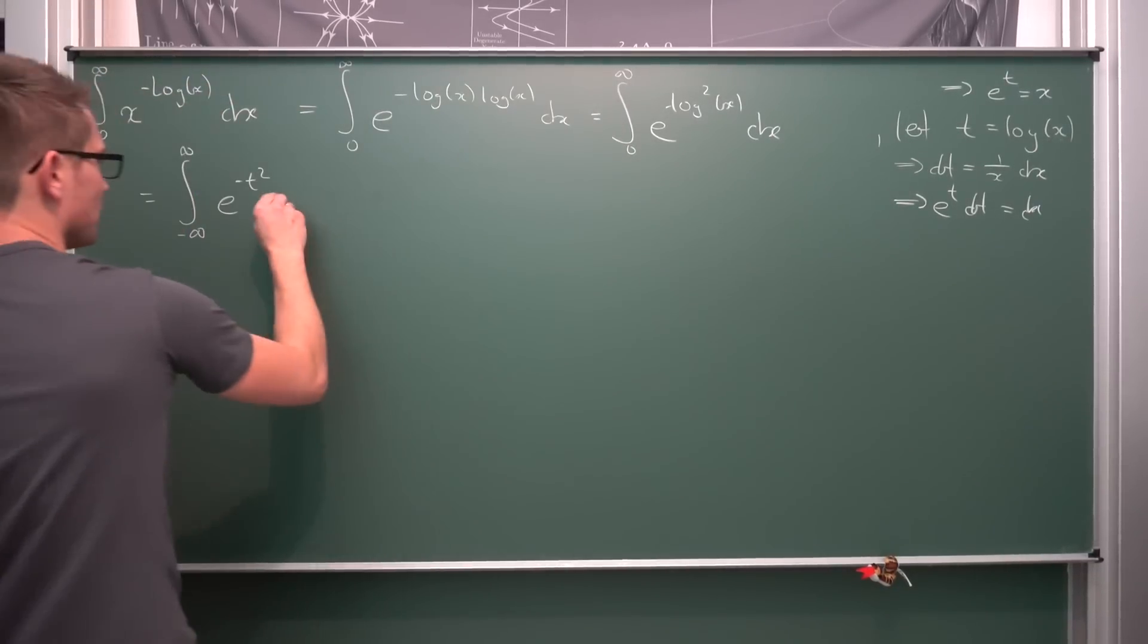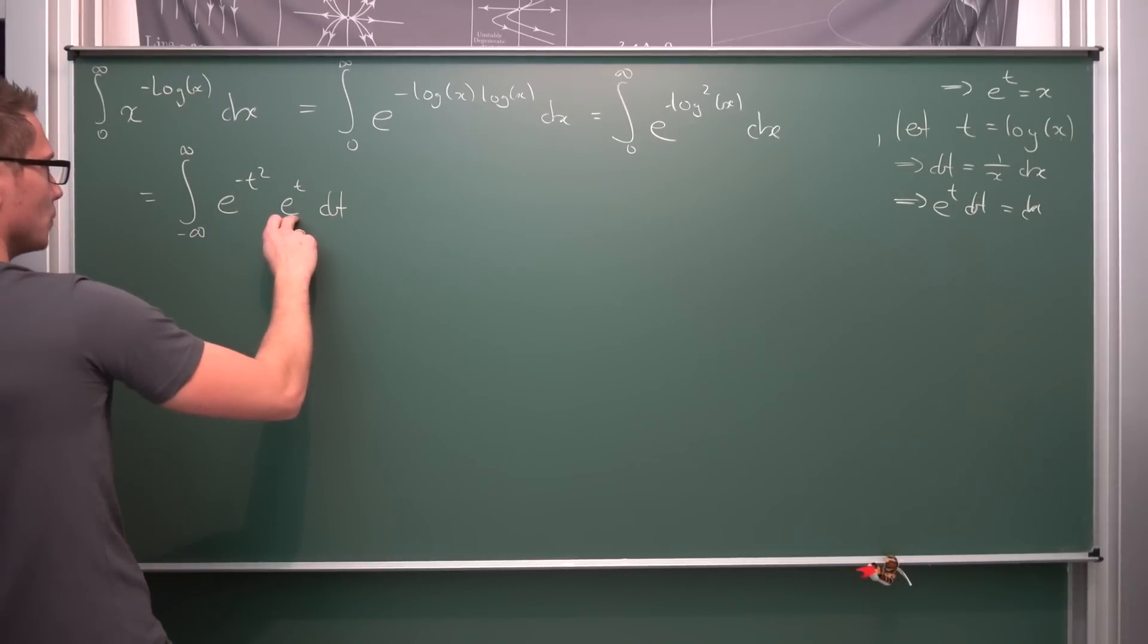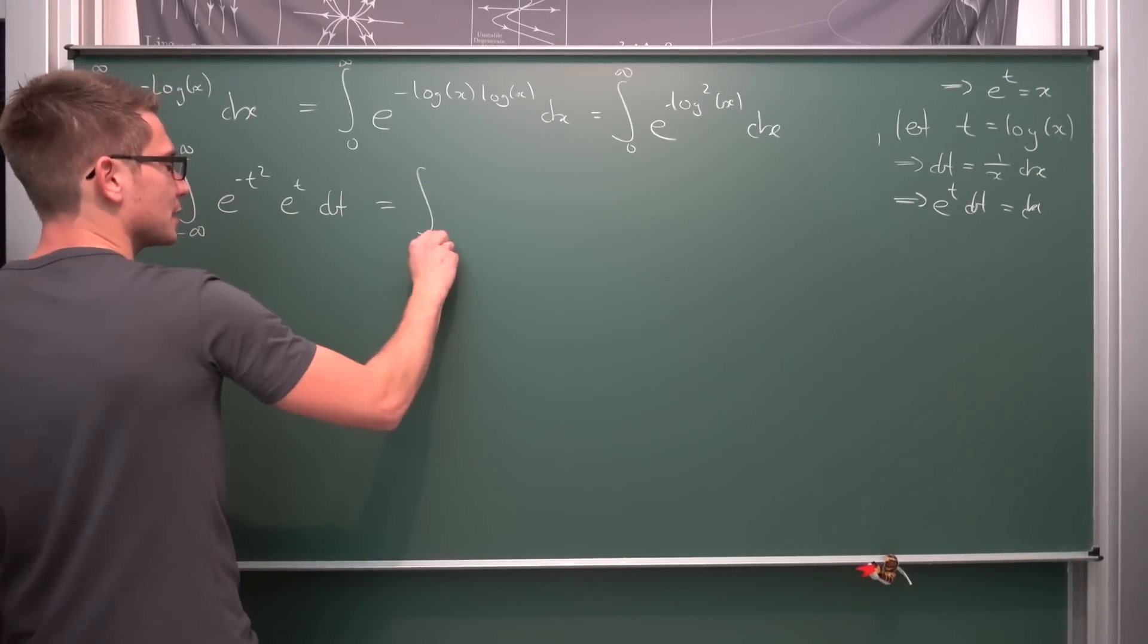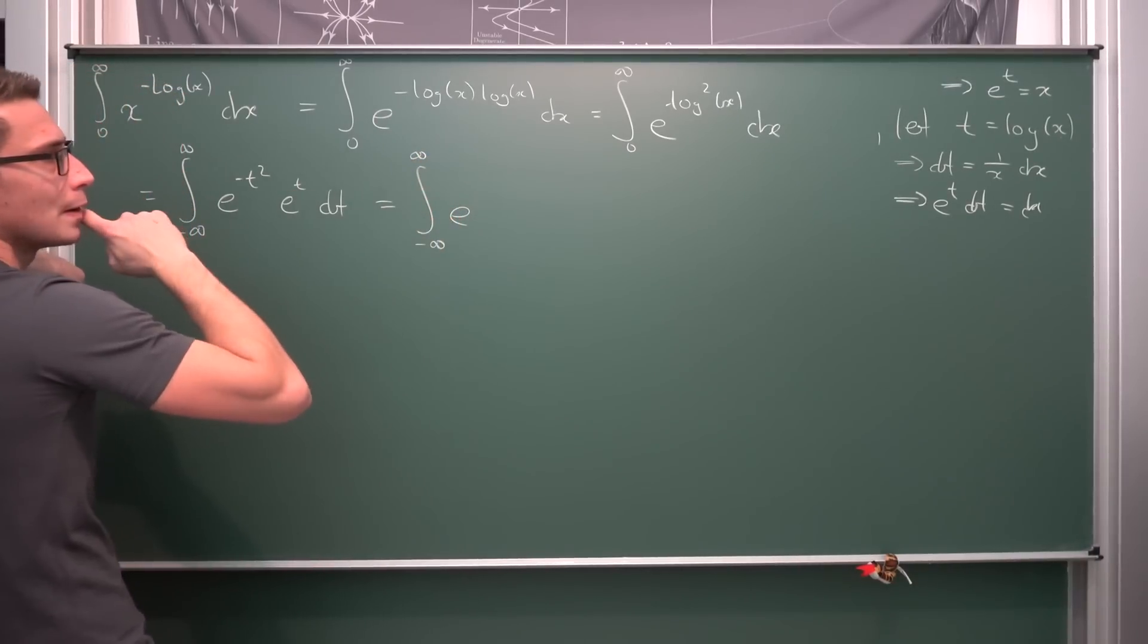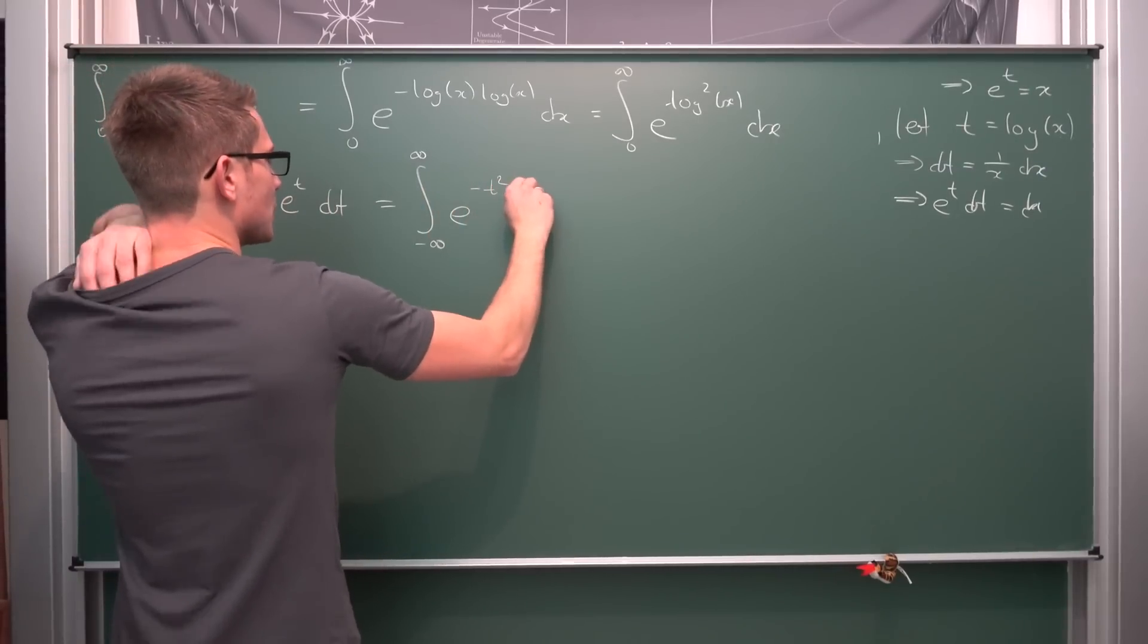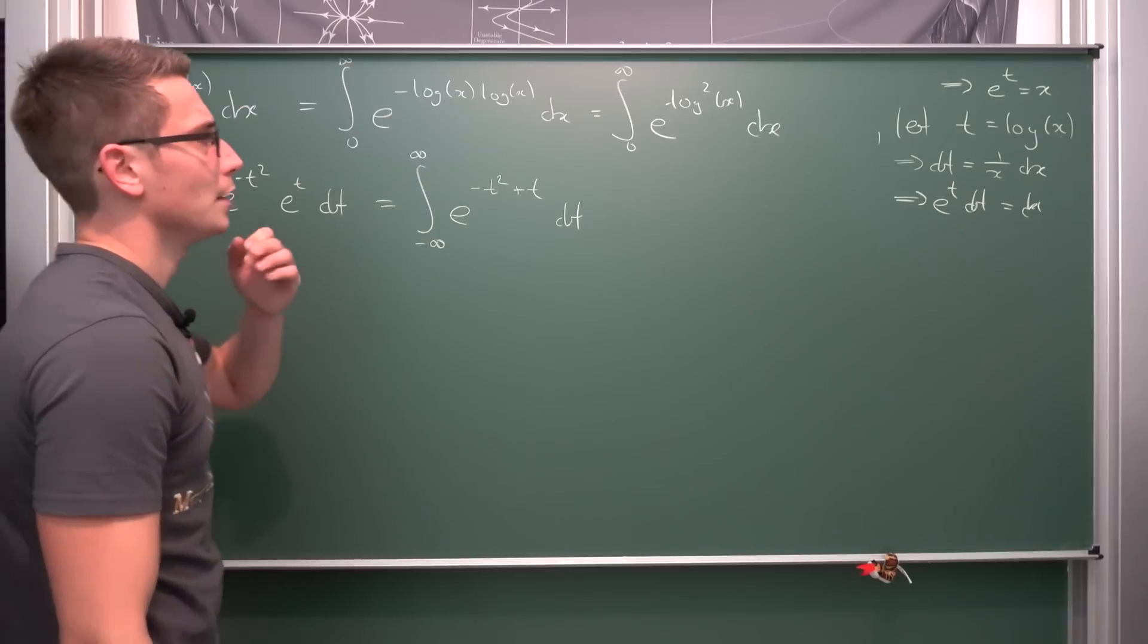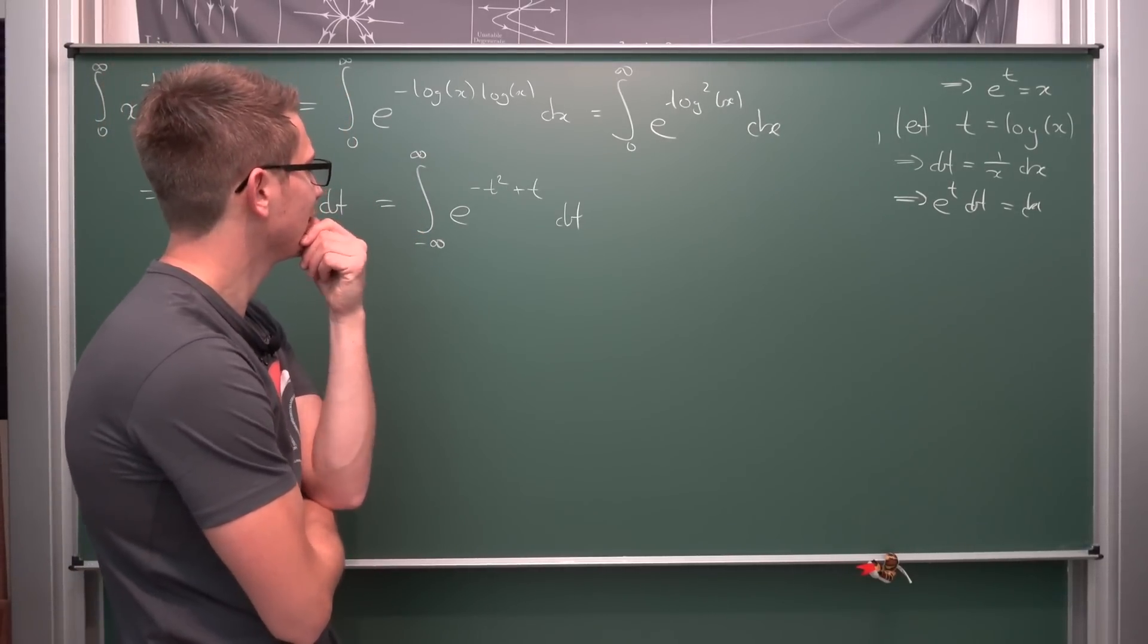We get e to the negative t squared, and other than that we have e to the t dt. Now we have the multiplication of exponential functions, meaning we can use the function equation for the exponential, giving us negative infinity to infinity integral e to the negative t squared plus t dt.